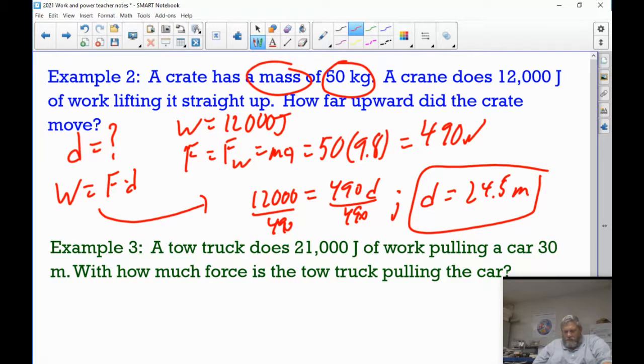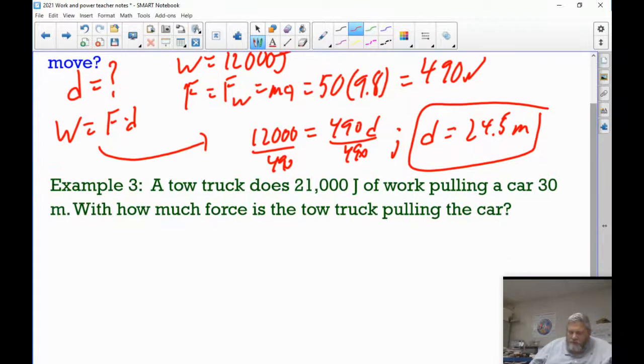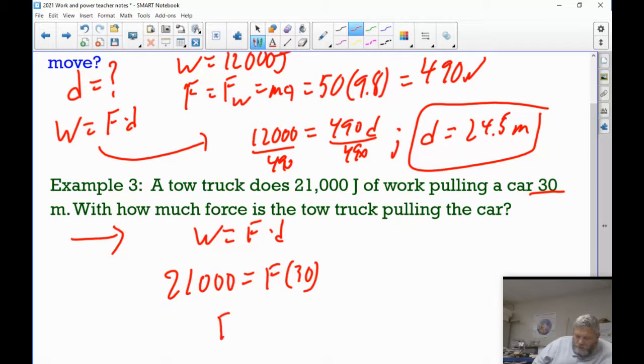Very straightforward. Just solve for it. Just remember, if you're given the mass, then if we're lifting it, we're going to have to multiply that by 9.8 to get the weight. Here's one. A tow truck does 21,000 joules of work while pulling a car for 30 meters. Now, a tow truck is going to be moving something horizontally, so we're not worrying about the weight here. So again, W equals F times D. 21,000 equals F times 30. So solve for F. Divide both sides by 30. That's 700 newtons of force.